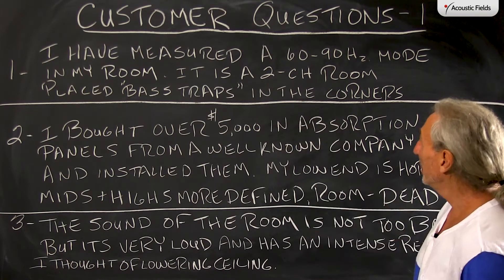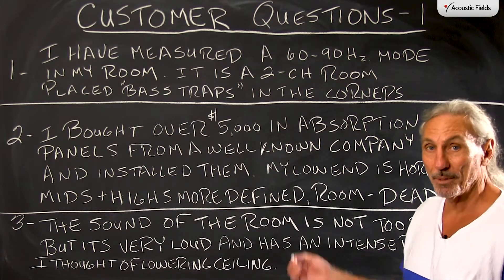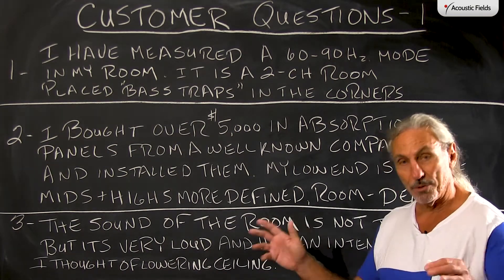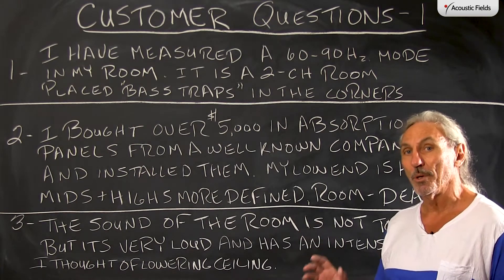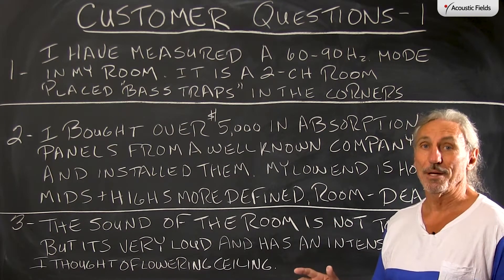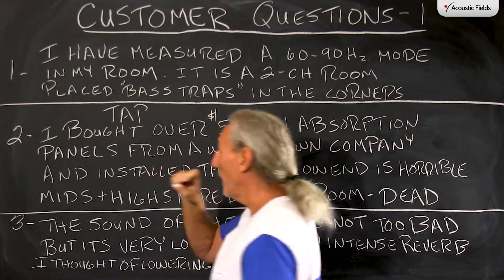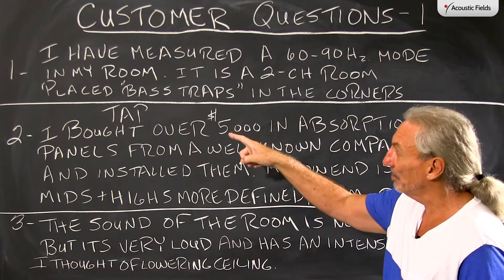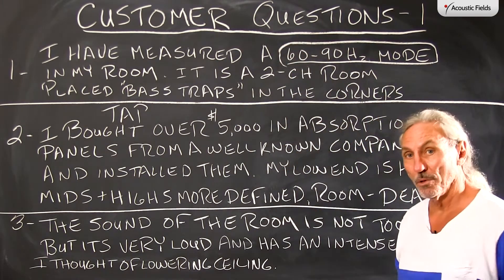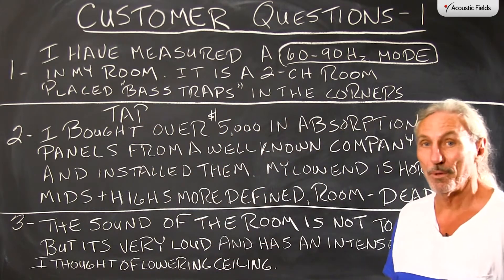First one: I have measured a 60 to 90 hertz mode in my room. It's a two-channel room and I placed bass traps in the corners, but he still has the problem. This goes back to people being conditioned to put things in the corners without really looking at what's causing the problem, what type of treatment they need, how much treatment they need, and where to put it. The acronym we use is TAP — type, amount, and position — to make sure we're locating the problem, applying the right treatment, the right amount, and putting it in the right place.